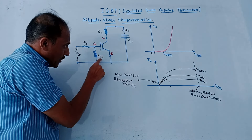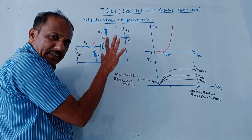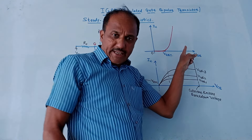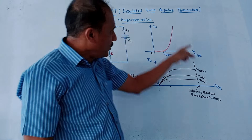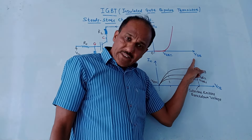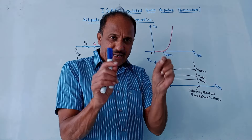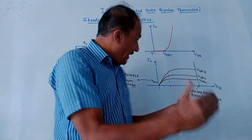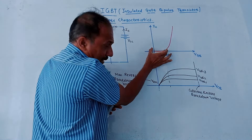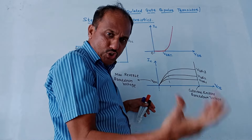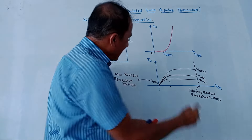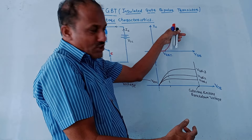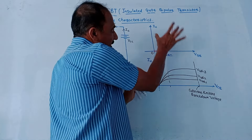First is the transfer characteristic — a graph of IC (output current) versus VGE (gate-to-emitter voltage). When VGE is less than the threshold voltage, the device is switched off. Once VGE exceeds the threshold level, the collector current increases exponentially, as shown in the diagram.